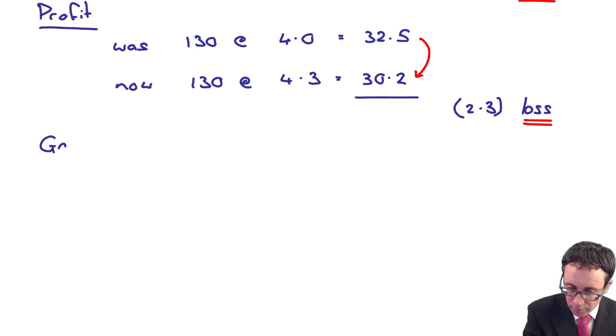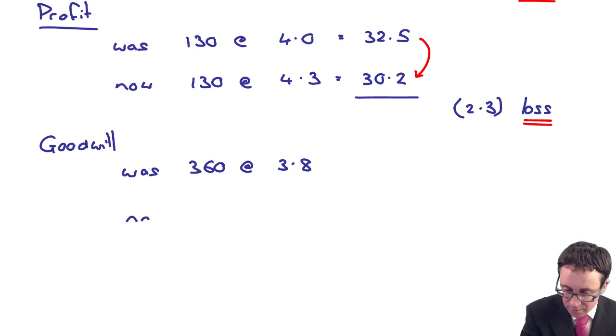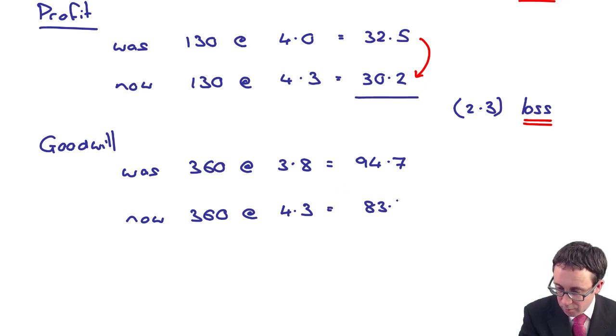Then what you've got as well is your goodwill. Your goodwill from your goodwill working was 360 and that was at 3.8. It's now 360 at 4.3.